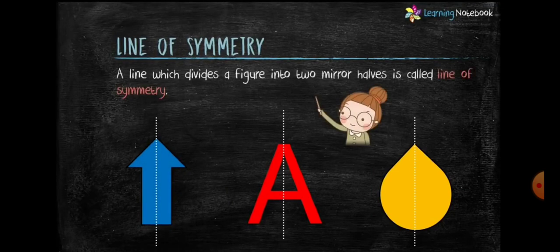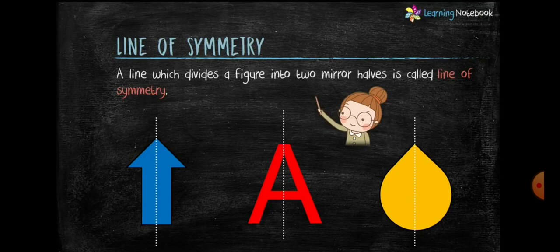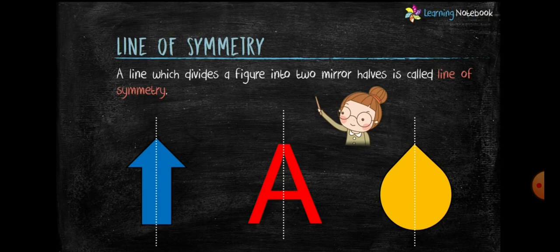Now, what is line of symmetry? A line which divides a figure into two mirror halves is called line of symmetry. Like here, these three figures have one line of symmetry.